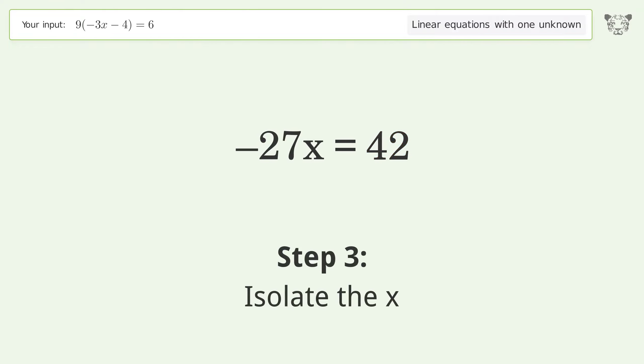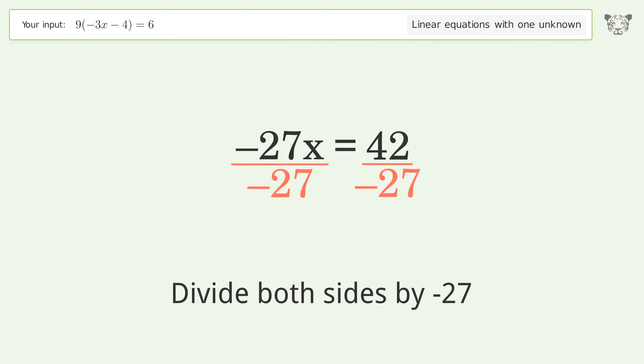Isolate the x. Divide both sides by negative 27. Cancel out the negatives.